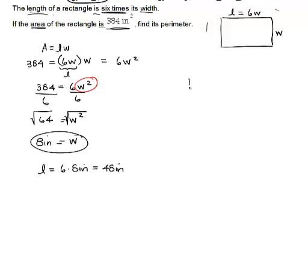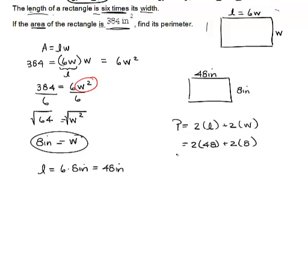So now my new rectangle looks like I have an 8 inch on this side and 48 inches on the long side. So I'm simply going to walk around. So I could either do 8 plus 48 plus 8 plus 48, or my perimeter is going to be 2 times my length plus 2 times my width, so that equals 2 times 48 plus 2 times 8.